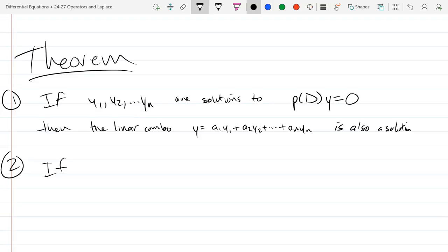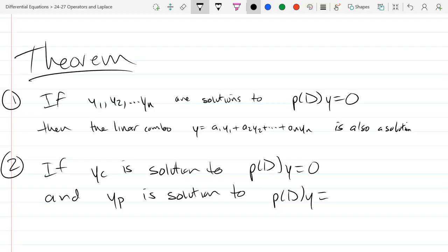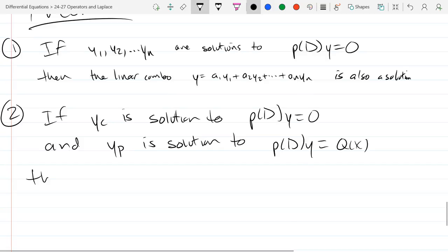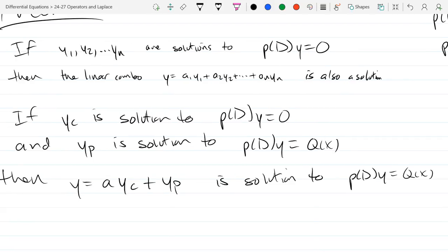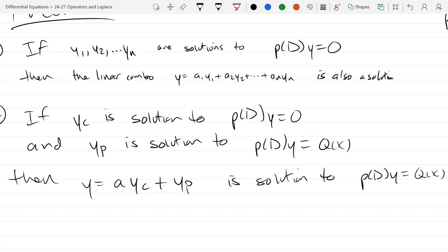And what else? If Yc is solution to P(D)y equals 0, then Y equals, and you can put a coefficient in front of Yc, A Yc plus Yp is solution to P(D)y equals Q of X. So this says you can add in a homogeneous solution and it won't change the fact that you have a particular solution.